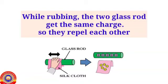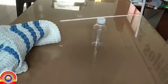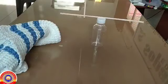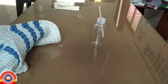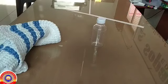When a glass rod is rubbed with silk, the glass rod acquires positive charge and the silk acquires negative charge. The two glass rods get the same charge, so they repel each other.